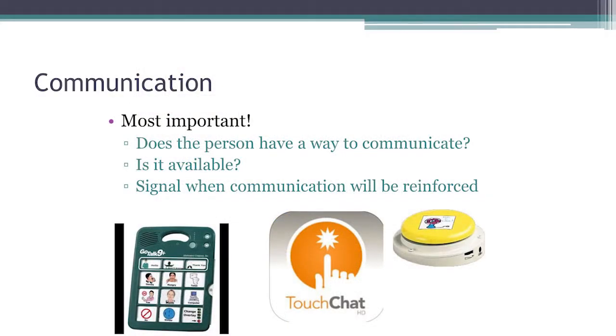Communication is the most important thing, and it's individualized. What works, especially with autism — we have speech generating devices, picture exchange systems, sign language, and verbal communication. Being open-minded to lots of different systems and figuring out what works best for that individual is the best gift you can give them.